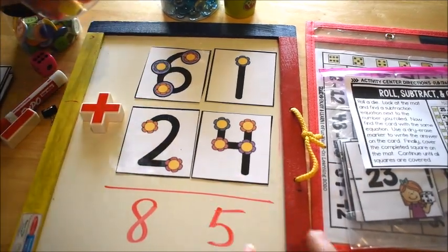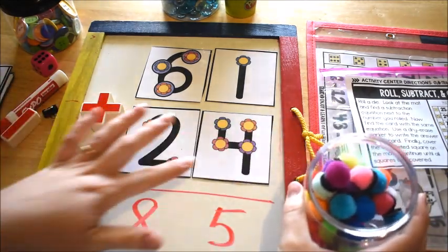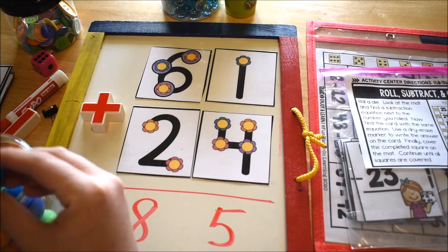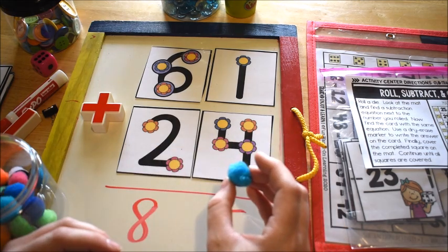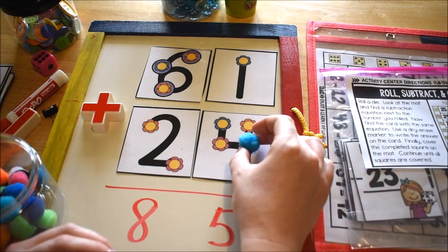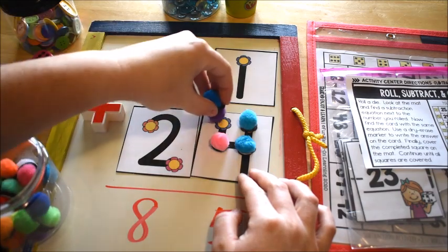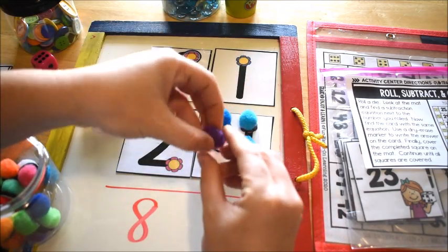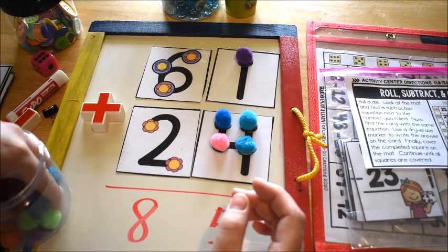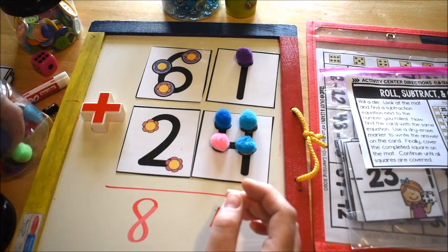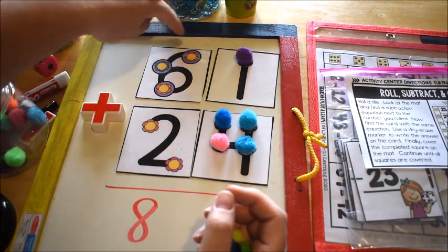We can use our touch points to add it and then we find our number. Now you can also use manipulatives on your touch points. If your student needs those manipulatives and they need to count out all the numbers you can do that too. These are just pom poms with magnets attached to them, and then I would just have them do one, two, three, four, and one more makes five, and they could write their answer.